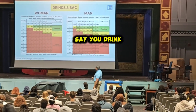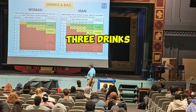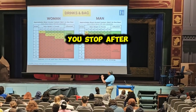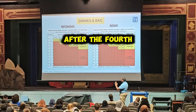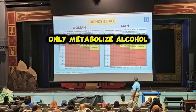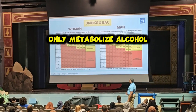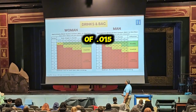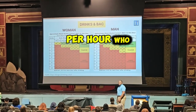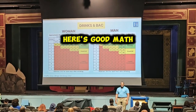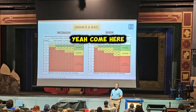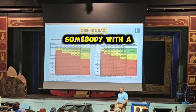What you have to understand is, in the first hour, say you drink three drinks and you get to the fourth hour. Say you stop after the fourth hour — you get to 1.1. The body can only metabolize alcohol at a rate of 0.015 per hour. Who here is good at math? Well, who here has a phone? Then you're good at math.